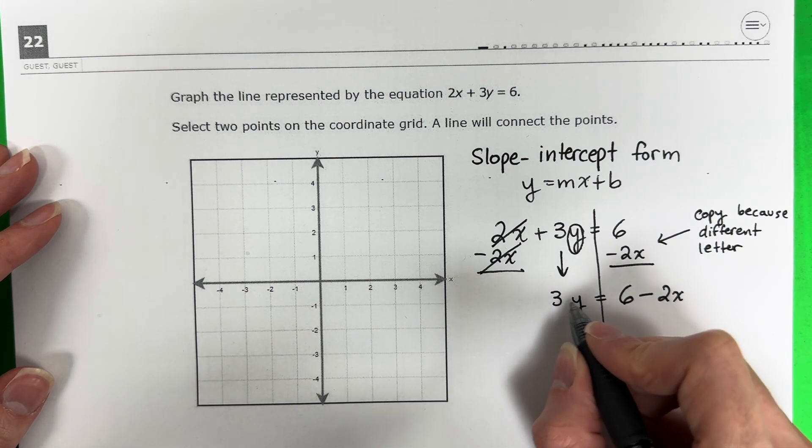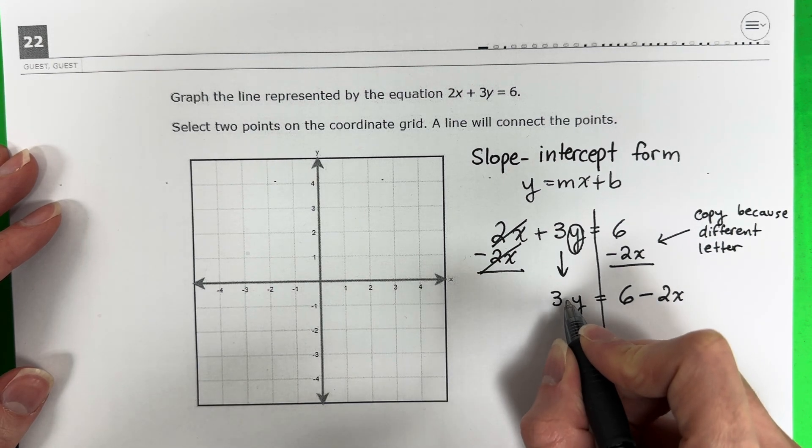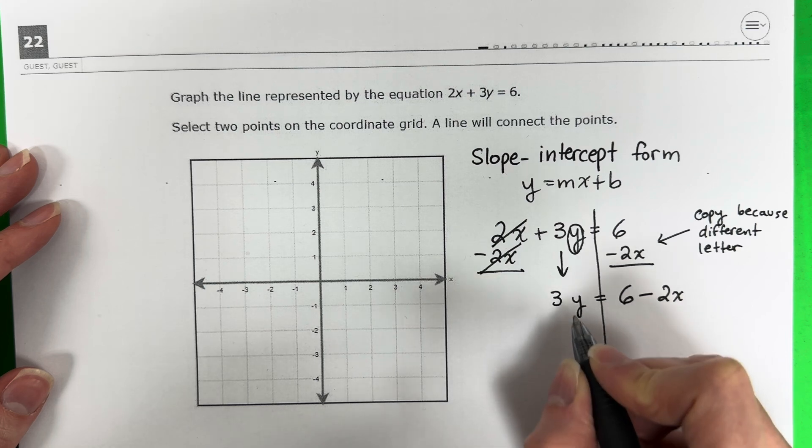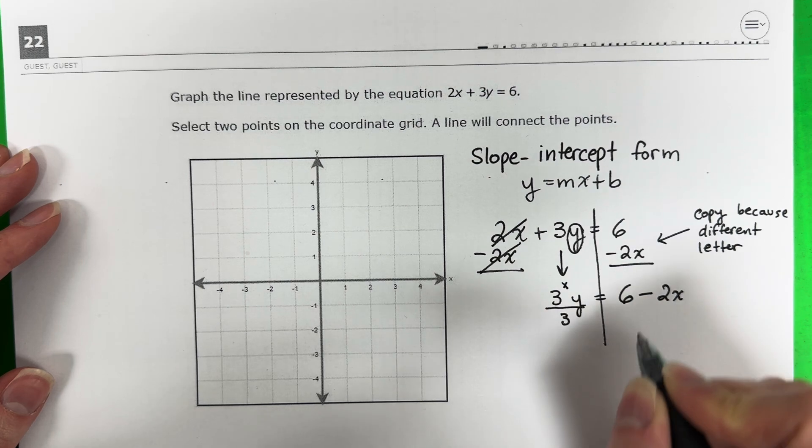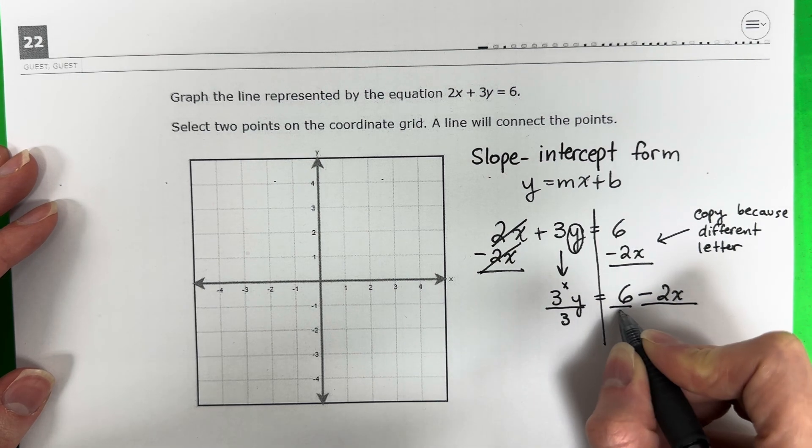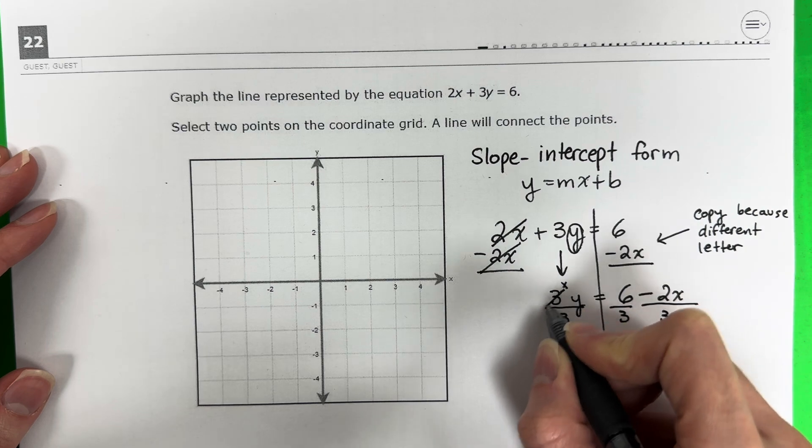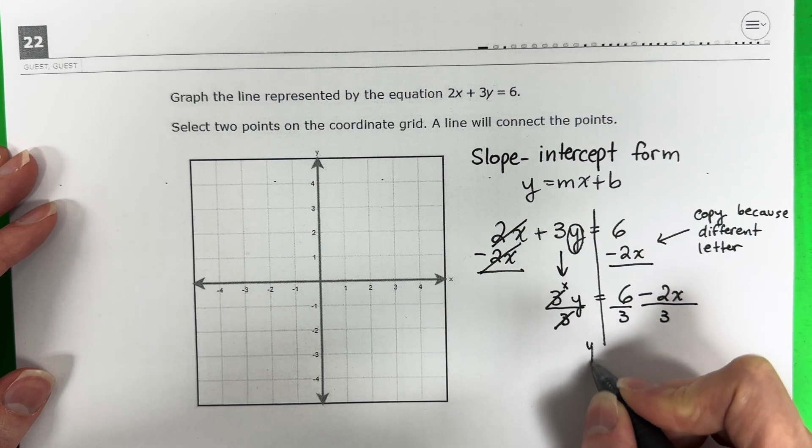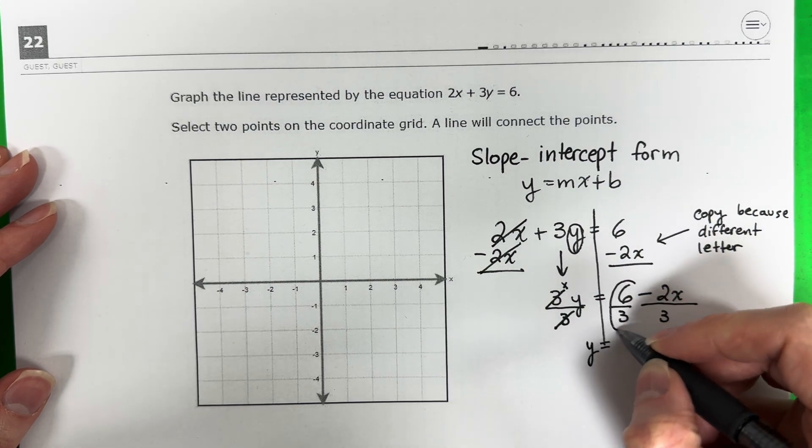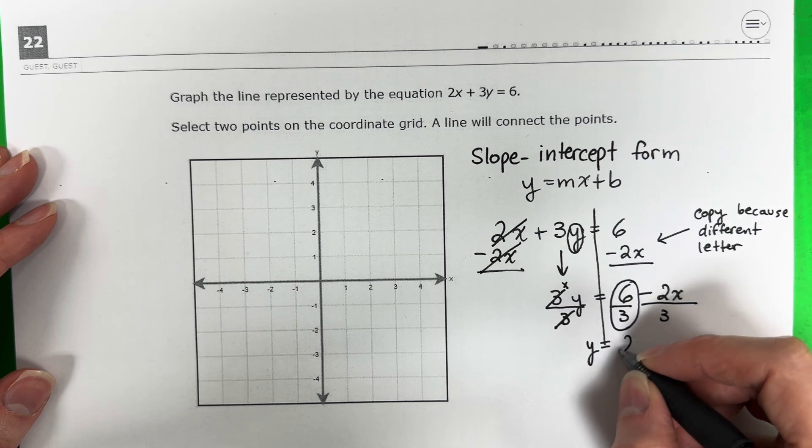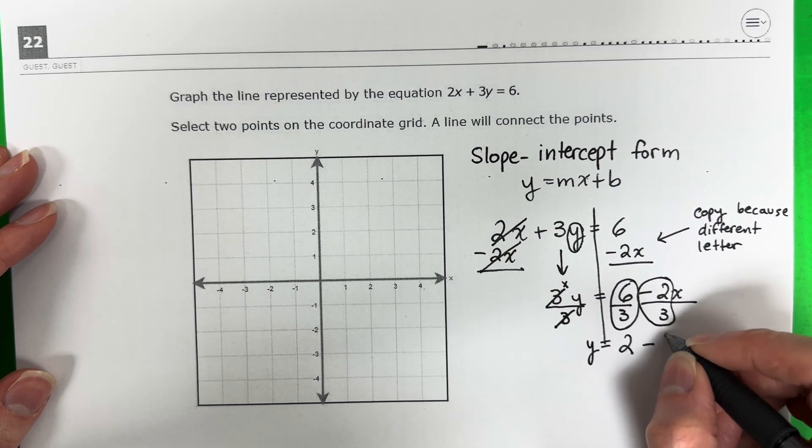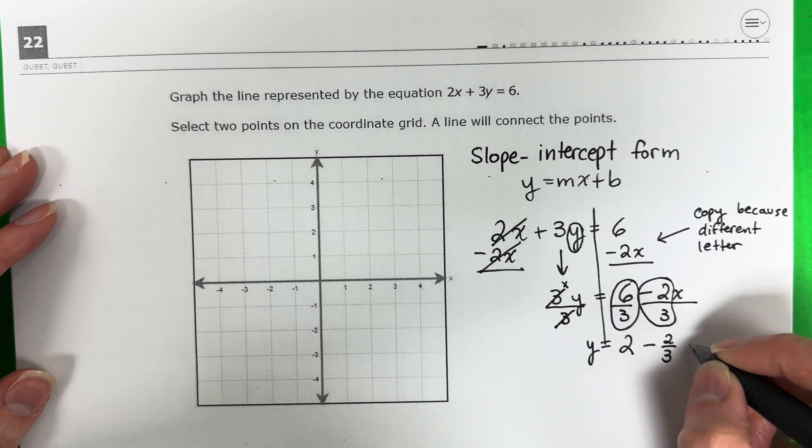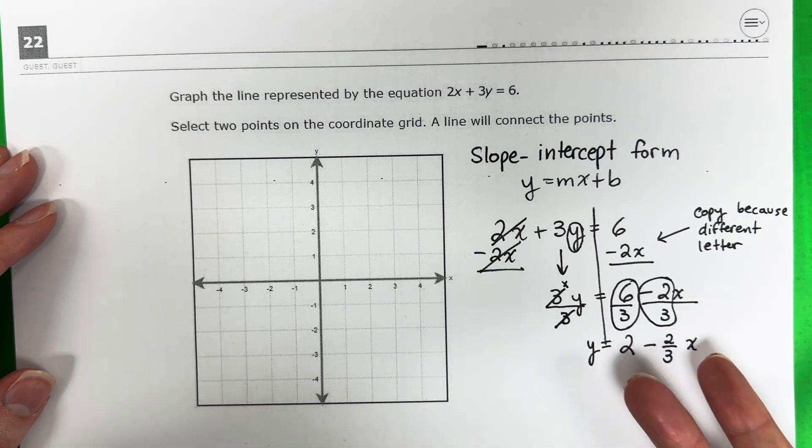The last part is I want to separate the 3 from the y. If there's no sign in the middle, this is actually 3 times y right now. It's multiplication. The opposite of multiplication is division. You will divide by 3 and you will divide each part by 3. This will cancel and you get y equals 6 divided by 3 is 2. And then negative 2 divided by 3 is the same thing. It's negative 2 thirds.